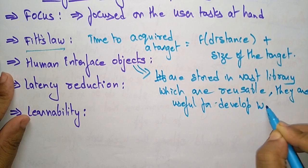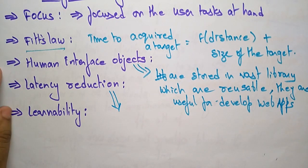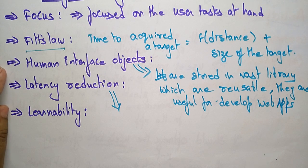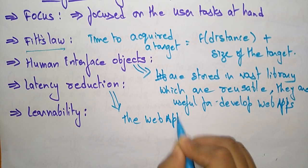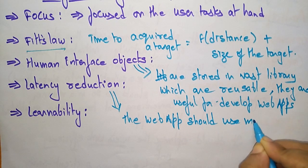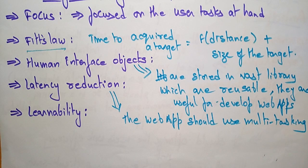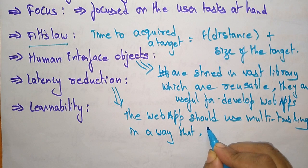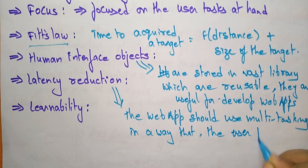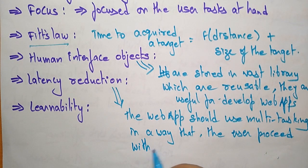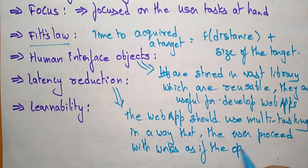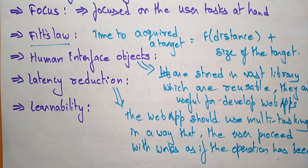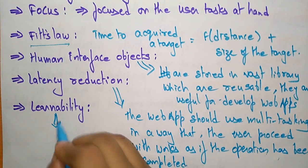Next is latency reduction. The web app should use multitasking in a way that lets the user proceed with work as if the operation has been completed. So the app must be designed to support multitasking so the user can continue working without waiting.